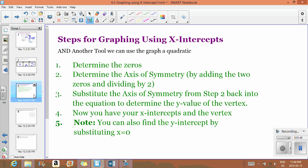So the steps to graphing using your x-intercept form are as follows. And this is just another tool to graph the quadratic. We've done a bunch before. This is just another one. So the first thing you need to do is determine your zeros. Once you've determined your zeros, you need to determine the axis of symmetry. The axis of symmetry for a parabola will always be halfway between your two zeros. So to get that axis of symmetry, you can add up your two zeros or your two x-intercepts and divide by two.